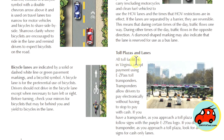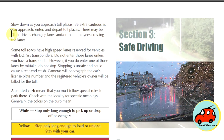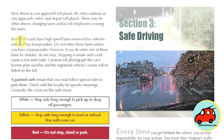All toll facilities in Virginia accept payment using E-ZPass toll transponders, which allow drivers to pay electronically without stopping. If you have a transponder, look for signs with the purple E-ZPass logo as you approach the toll booth. If you do not have a transponder, look for and follow signs for cash-only lanes. Slow down and be extra cautious as you approach, enter, and depart toll plazas, as other drivers may be changing lanes or toll employees crossing. Some toll roads have high-speed lanes reserved for vehicles with E-ZPass transponders — do not enter those lanes without a transponder. However, if you enter one by mistake, do not stop, as stopping could cause a rear-end crash; cameras will photograph your license plate and the registered owner will be billed.